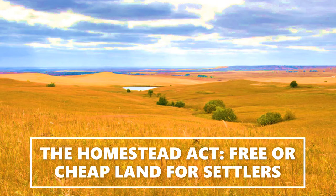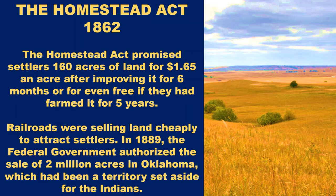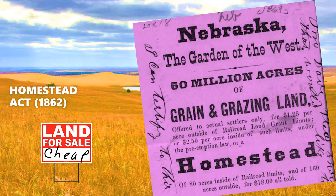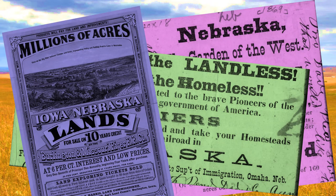The Homestead Act provided free or cheap land for settlers. It promised settlers 160 acres of land for $1.65 an acre after improving it for six months, or even for free if they would farm it for five years. Railroads were also selling land cheaply to attract settlers. In 1889, the federal government authorized the sale of 2 million acres in Oklahoma, which had been a territory set aside for the Indians. Ads promising cheap land in the western territories appeared in newspapers throughout the East, attracting many settlers.